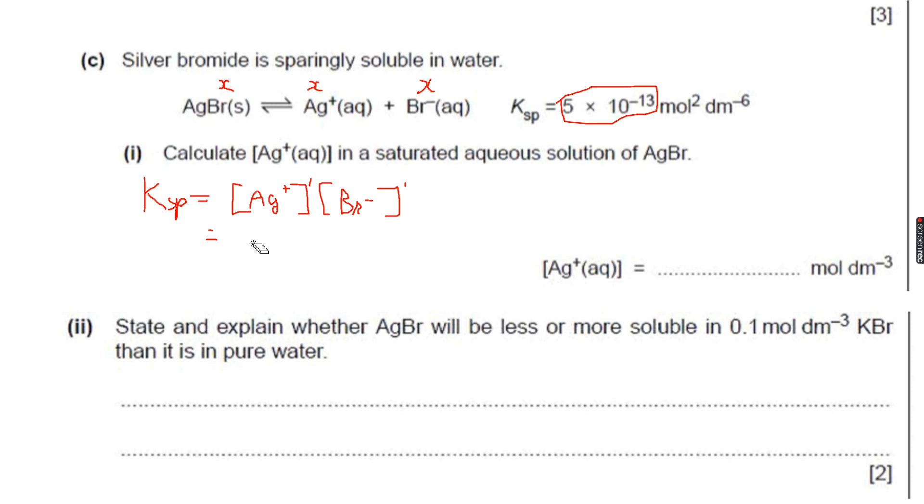This is equal to X times X because both are X. So this will be X squared. So the concentration of Ag plus ions, which we have to calculate as X, and Ksp is equal to X squared. So X will basically be under root of Ksp, and this will be under root of 5 into 10 to the power of minus 13.